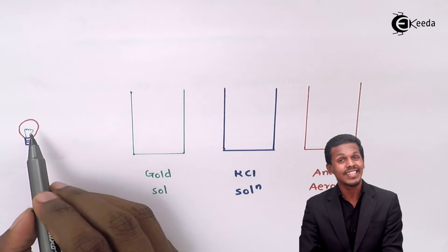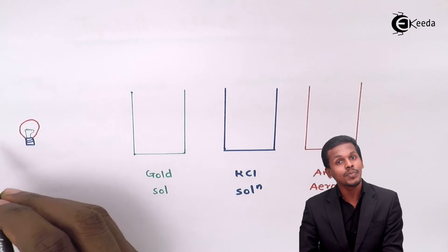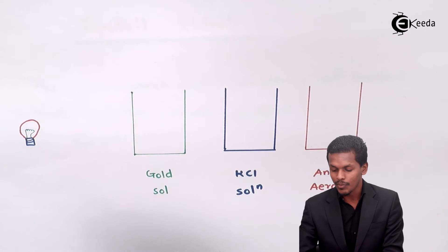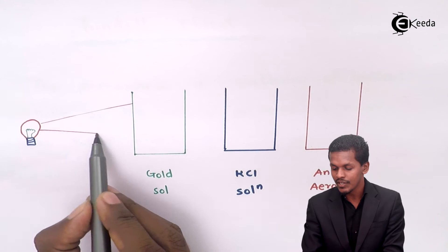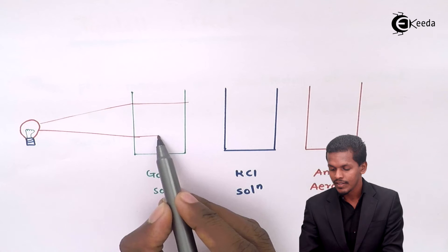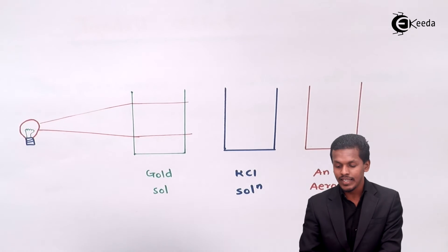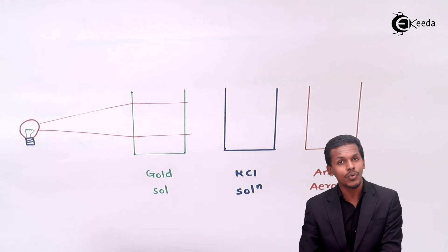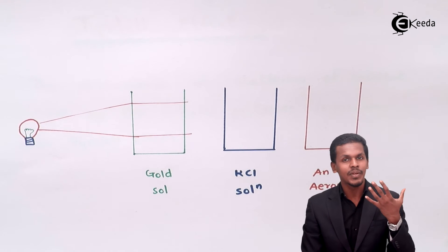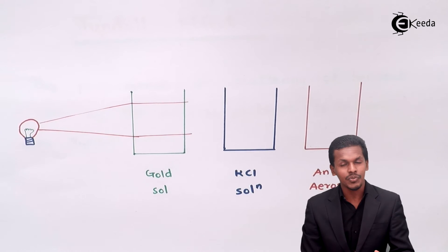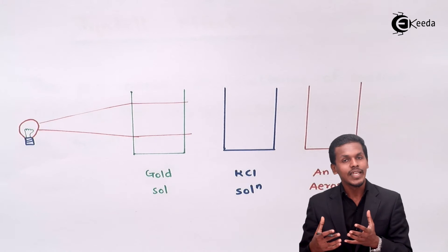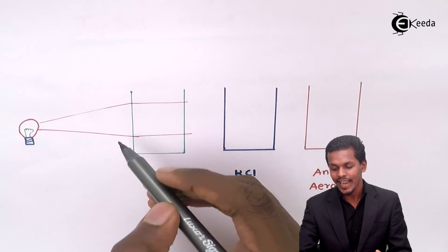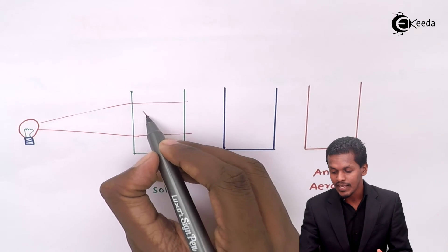The light from the source is not visible initially. When it is incident on the gold sol — since gold sol has a particle size from 1 nanometer to 10³ nanometers — this particular size causes the light to scatter. Various scattering of light takes place, and now the light becomes visible as it passes through the gold sol.